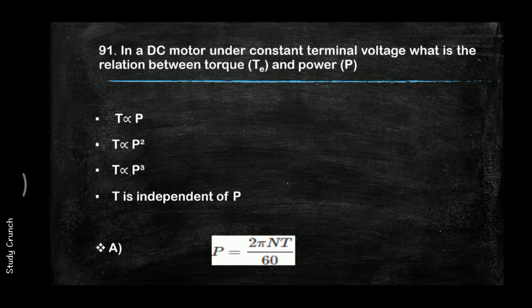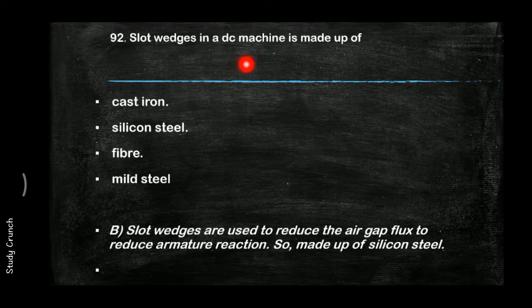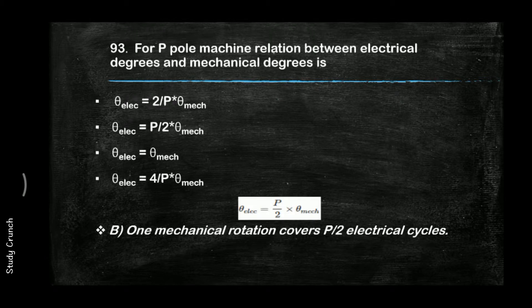In a DC motor under constant terminal voltage, what is the relationship between torque and power? Torque is directly proportional to power, so the answer is A. Next, slot wedges in a DC machine are made up of silicon steel, used to reduce the air gap flux and reduce armature reaction.